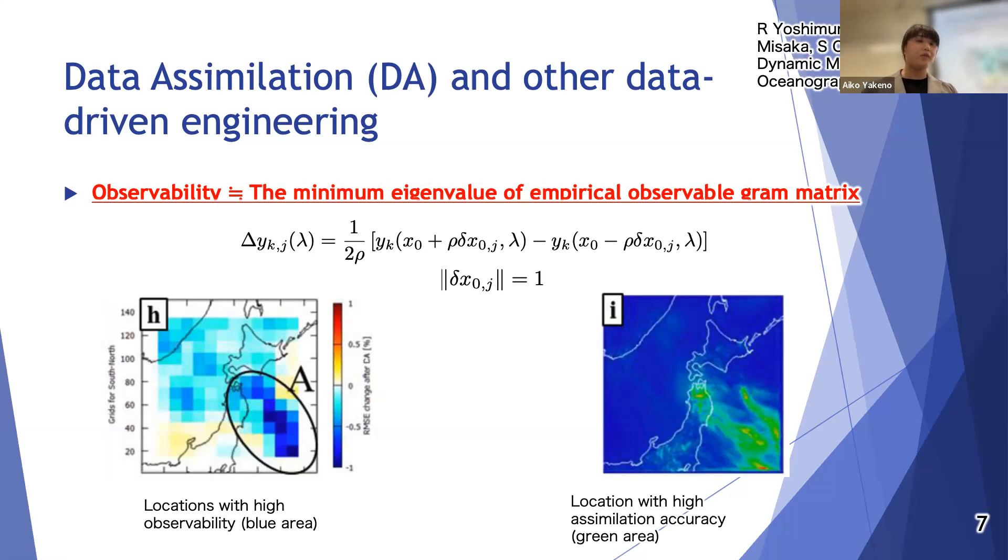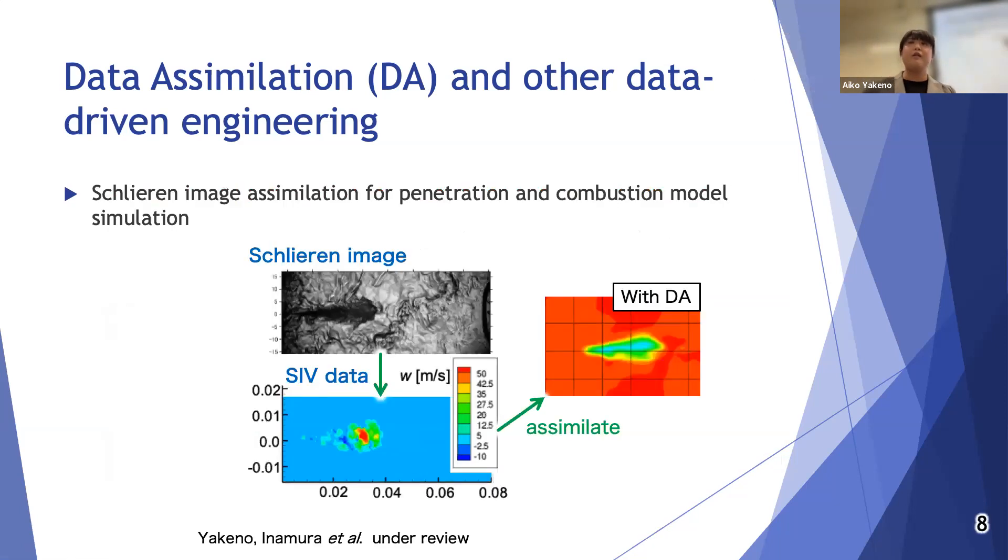We also applied data assimilation of schlieren images of a jet. This is also from collaboration. We work with Denso Corporation. This is to increase the jet penetration in combustion model simulation. Here we applied schlieren image velocimetry, we call it SIV, to obtain the velocity profile in two dimensions. This approach improved the data assimilation results.